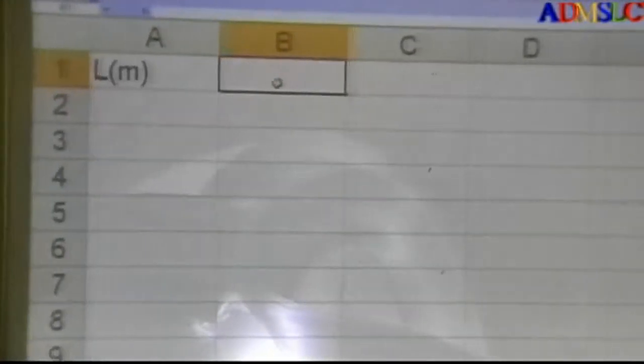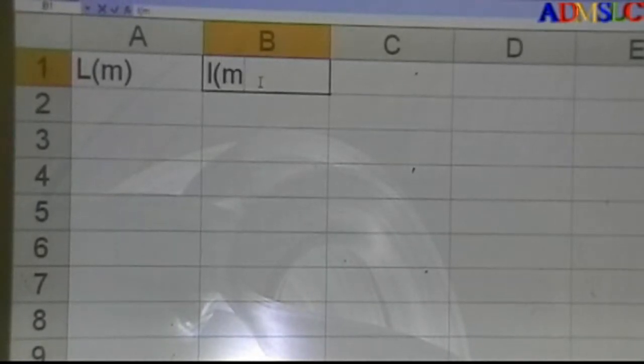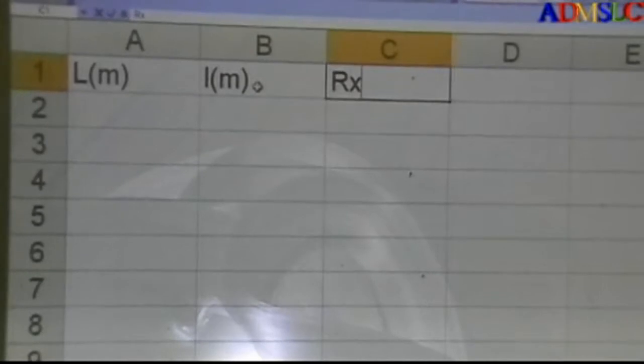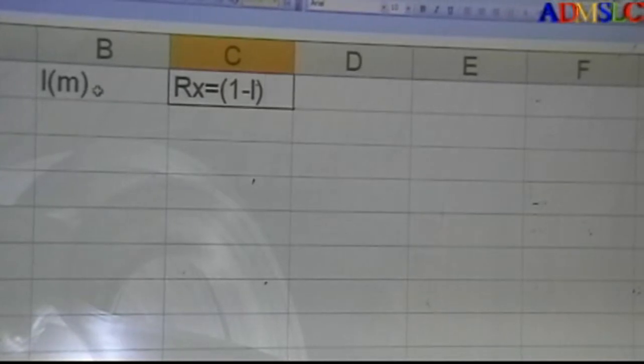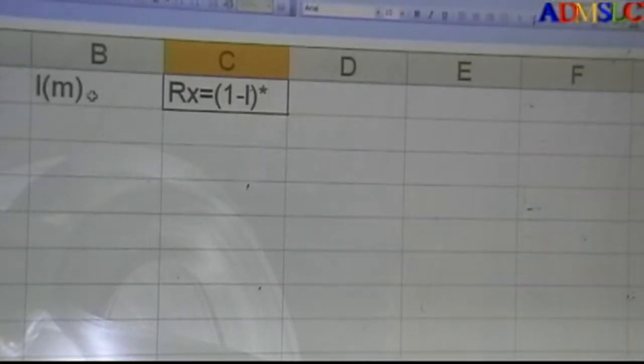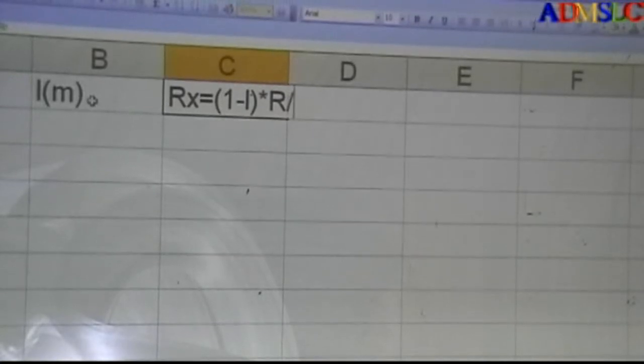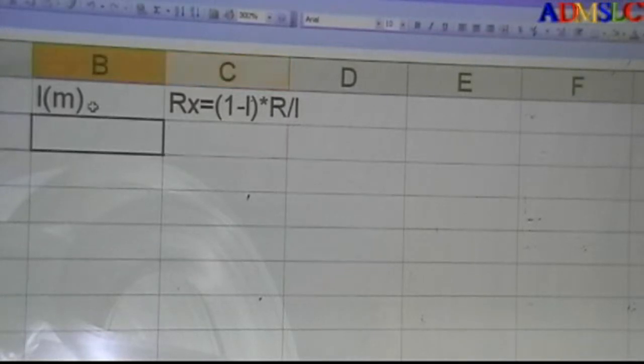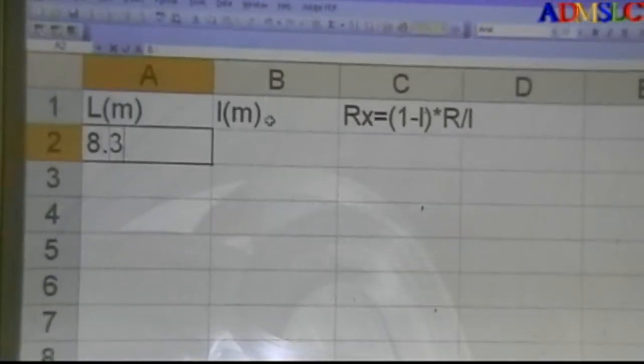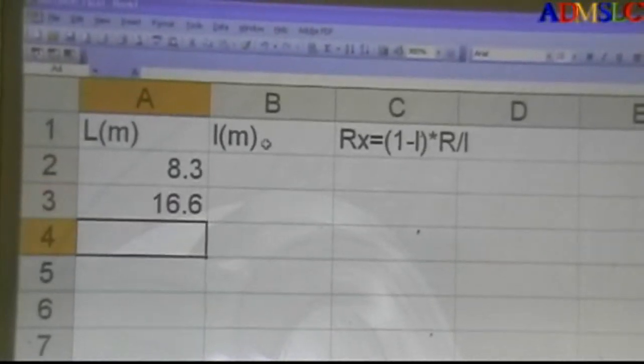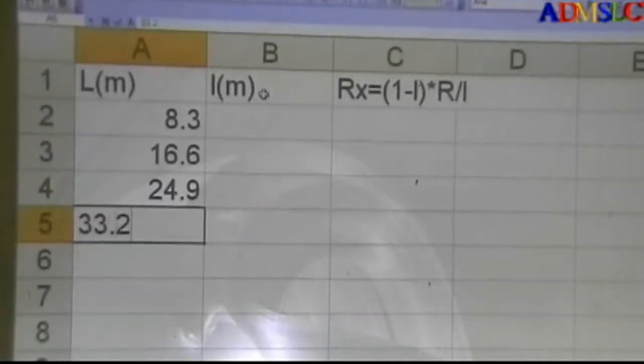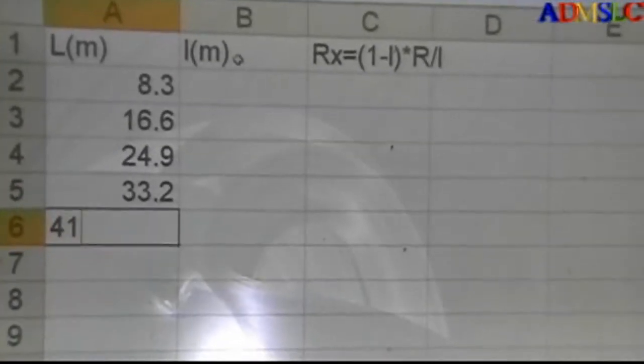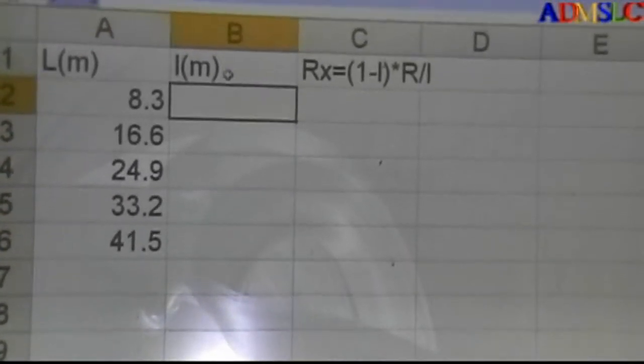Okay, this is L in meters, and here l small in meters also, and here the Rx. And this is equal (1 minus l) times R divide l. Okay, this L is 8.3, 16.6, 24.9, 33.2, and 41.5.